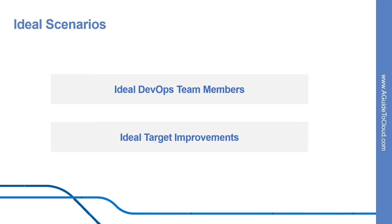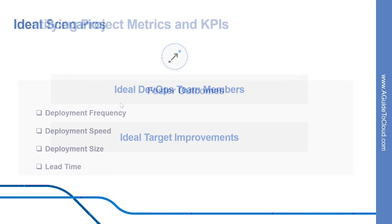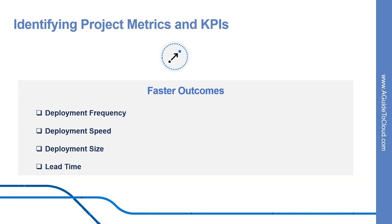Let's identify project metrics and KPIs. Goals need to be specific, measurable, and time-bound. To ensure that goals are measurable, it is important to establish and agree upon appropriate metrics and key performance indicators. While there is no specific list of metrics and KPIs that apply to all DevOps projects, let's discuss some of the commonly used ones.